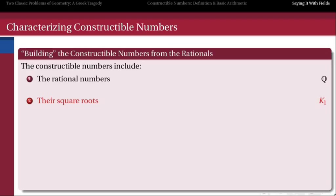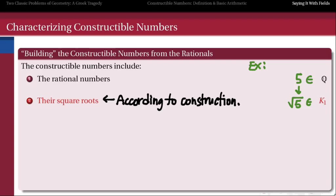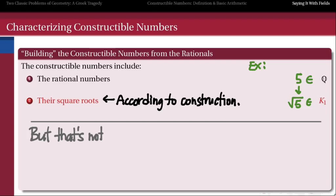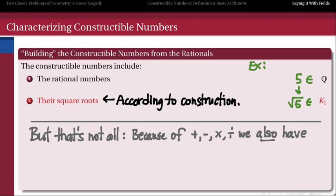But then more is true according to our square root property. If I can construct any rational number, then I can also construct the square root of that rational number, according to the construction with inscribed angles inside of a circle. So as an example, if I take the rational number 5, I can construct the irrational number √5. That's going to belong to what we might call the first level on our list of constructible numbers — we'll call it K1. But here's the wrinkle: we don't just get pure square roots of rational numbers, because we also have addition, subtraction, multiplication, and division. Not only can I construct √5, but I can also construct, for example, 4 minus √5.